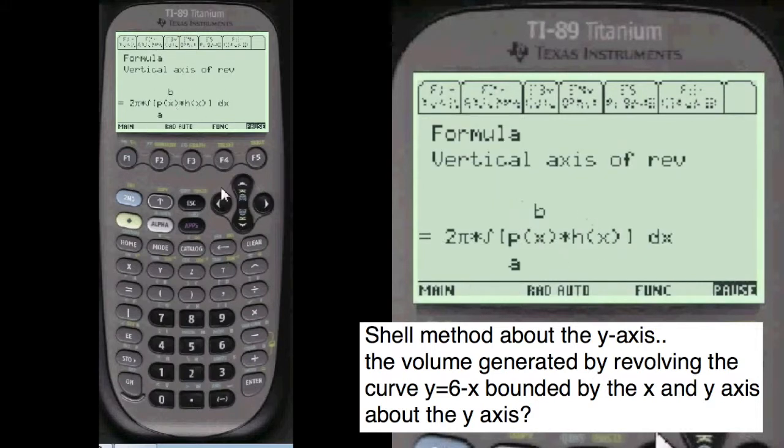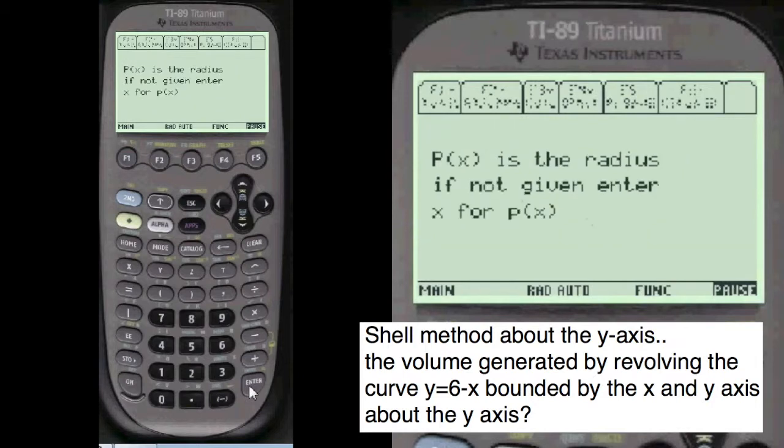Here's the formula. It's taking me a long time to program this stuff, but if p of x is the radius, it's not given, enter x for the p of x. Because there's two functions, p of x and h of x.